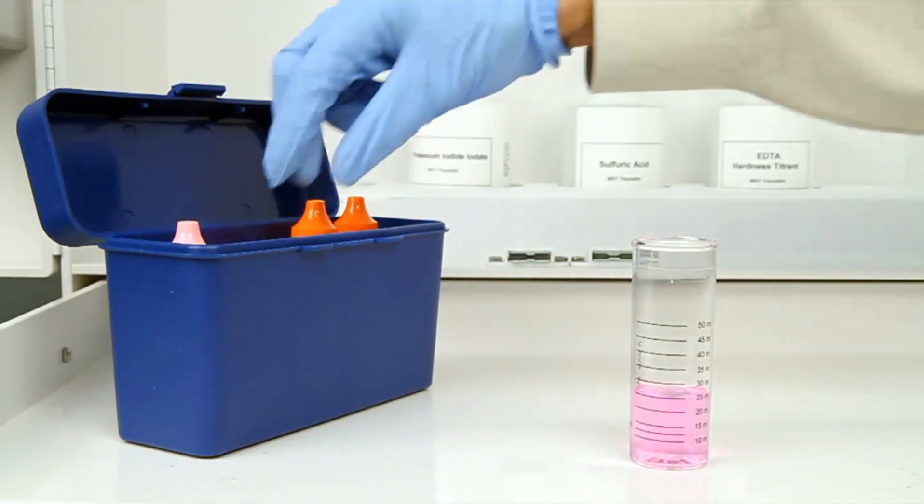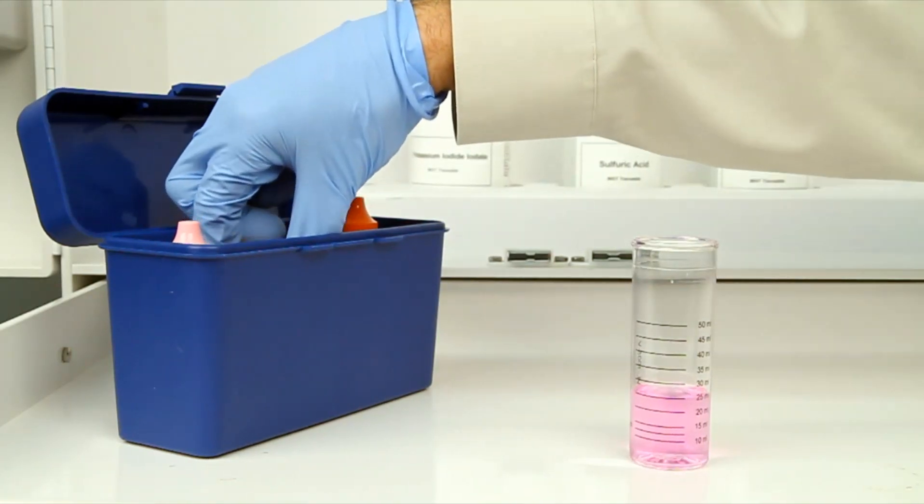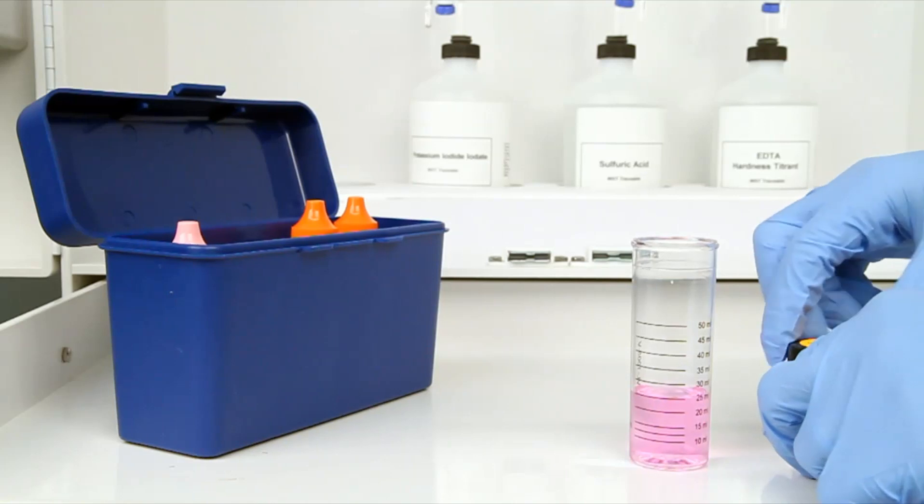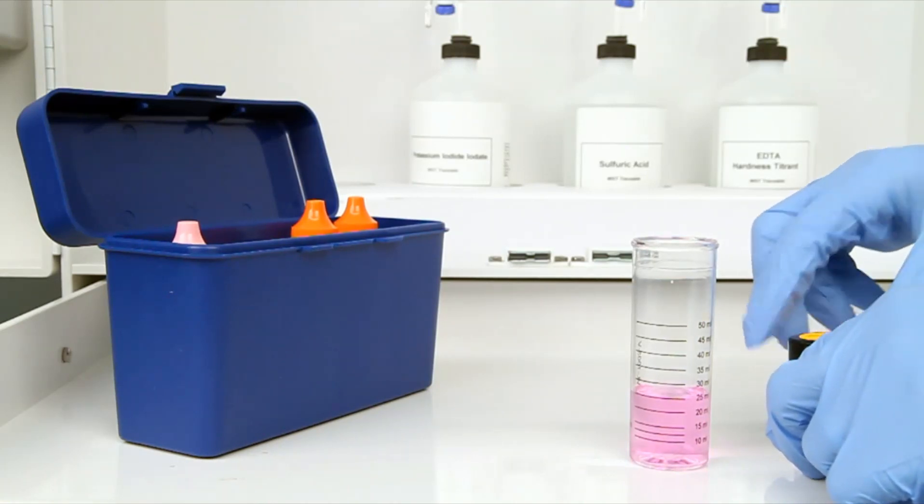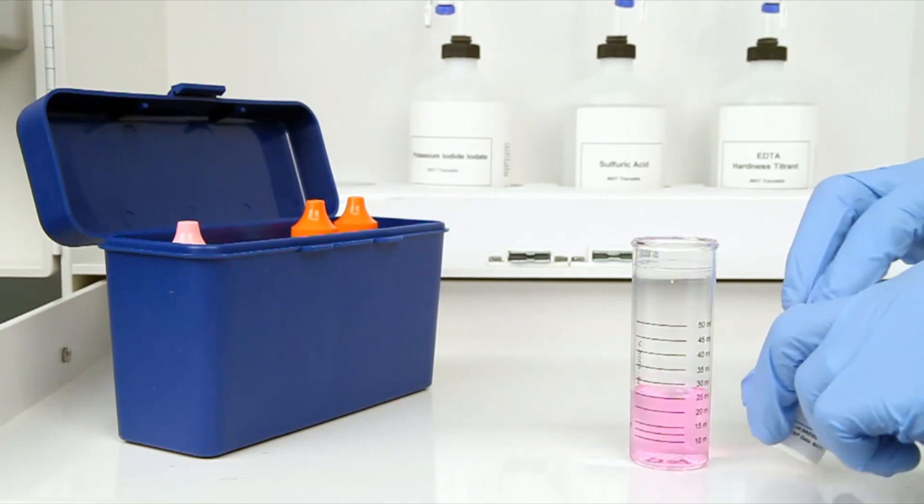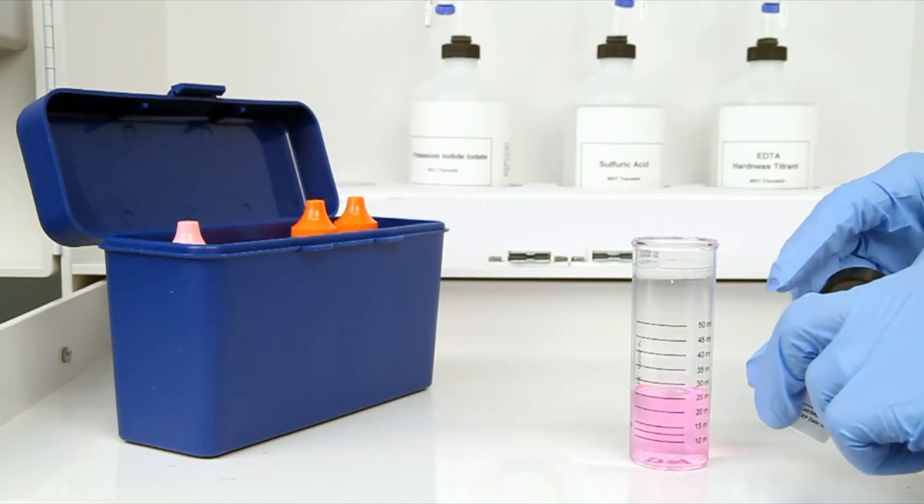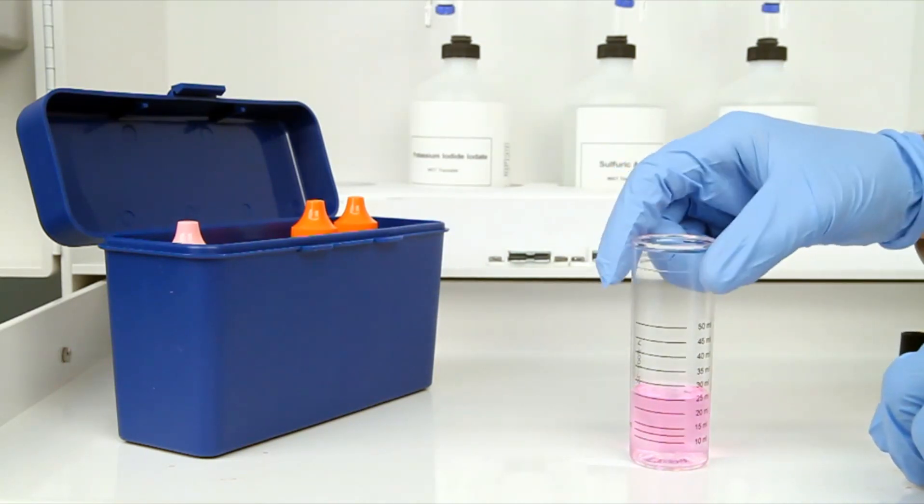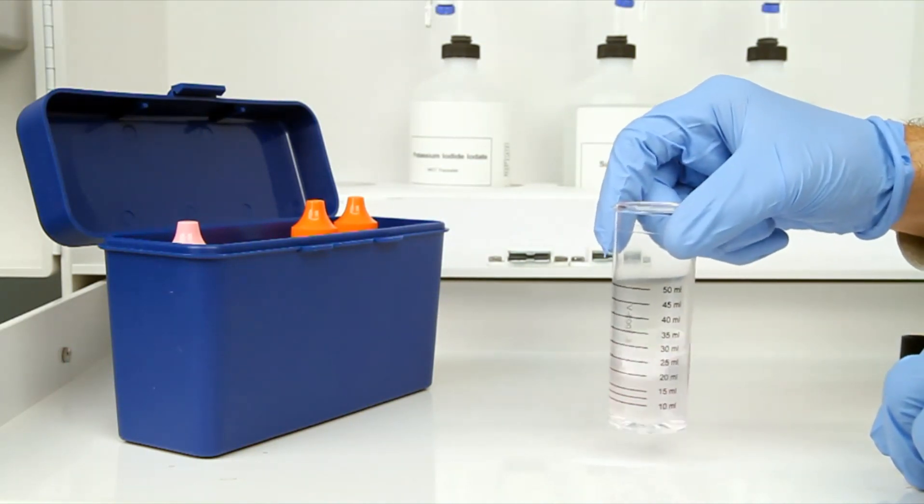The next step according to the endpoint ID procedure is to add the starch acid powder one scoop at a time until the sample is changed from pink to colorless. It's important to swirl the vial after each scoop to make sure the powder is completely dissolved.